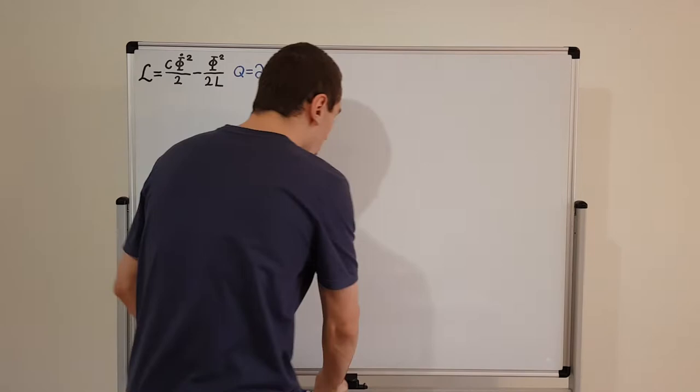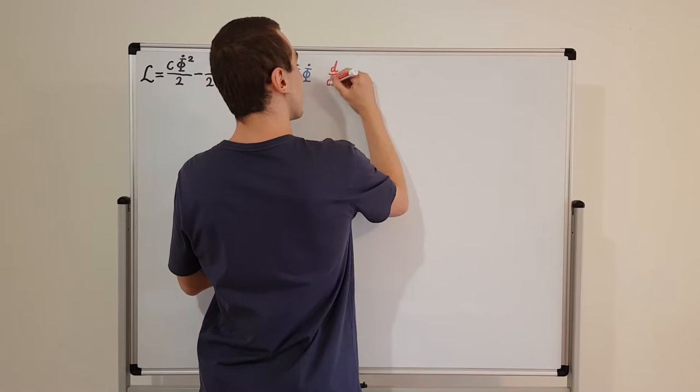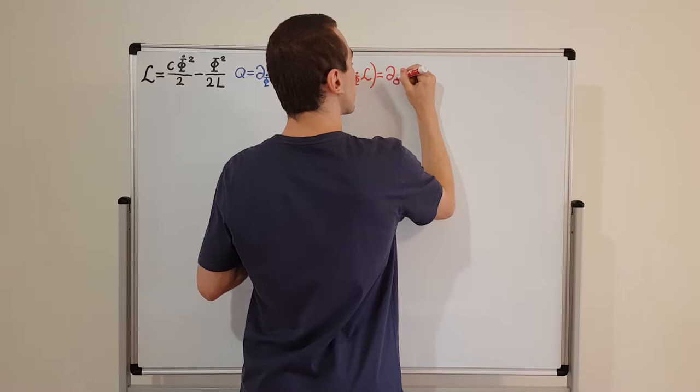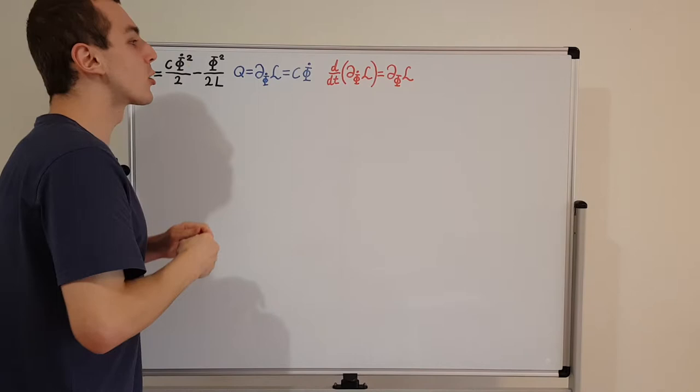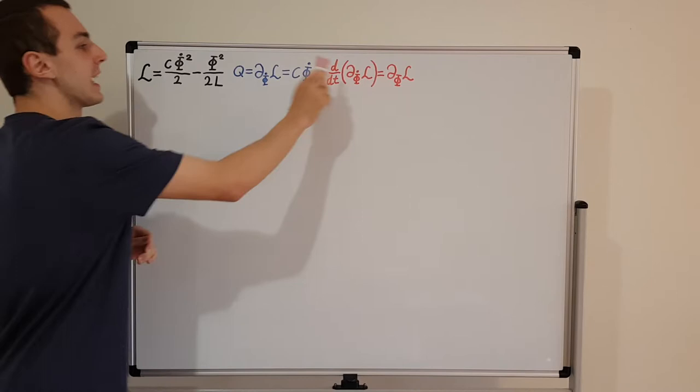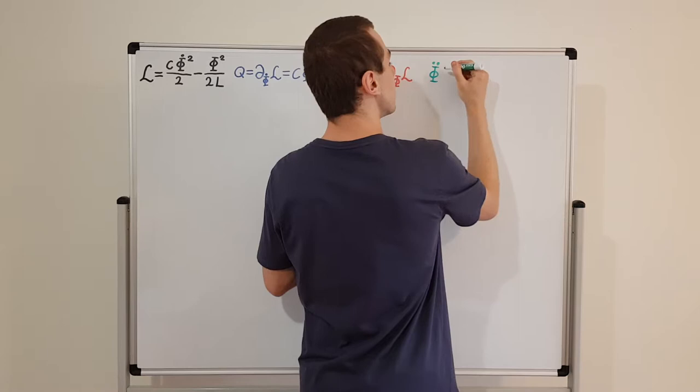Now let's write down the Euler-Lagrange equation. This has a time derivative of the partial derivative with respect to phi dot of the Lagrangian on the left-hand side, and this is all equal to the partial derivative with respect to phi of the Lagrangian on the right-hand side. Substituting our Lagrangian gives us the equation of motion: phi double dot is equal to minus omega squared times phi.